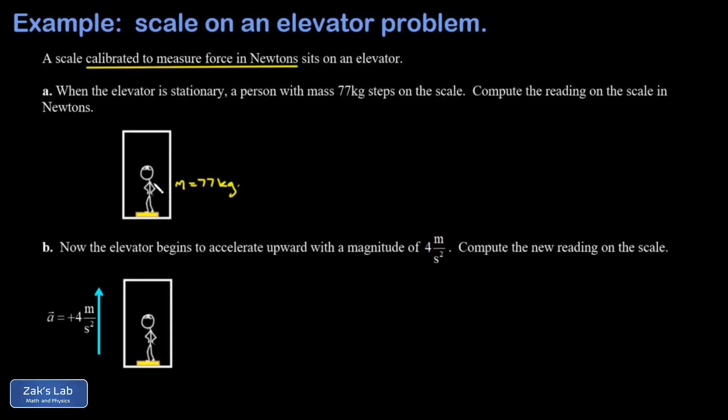I have gravity pulling down on the person with a magnitude of mg, and then I have the scale pushing up on the person's feet. I know that's going to be the reading on the scale, and I'll call that n for normal force. So if I'm being really complete in my analysis here, I